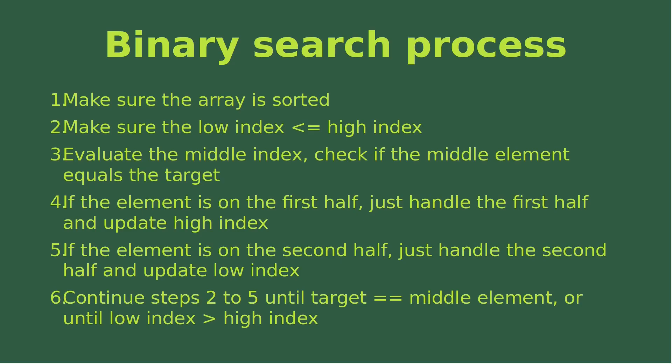On the other hand, if the element is on the second half, we just handle the second half of the array and then we update the low index. And then we continue steps two to five until we really find the target, which is equal to the middle element obtained by the middle index, or until the low index is larger than the high index, which is infeasible. In this case, we mean that the target cannot be found from the array.